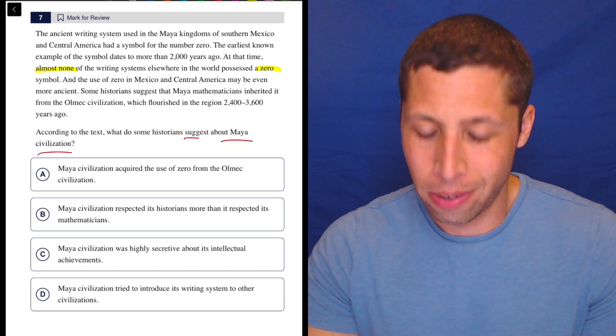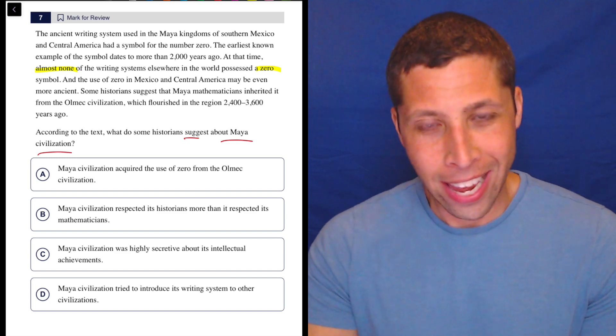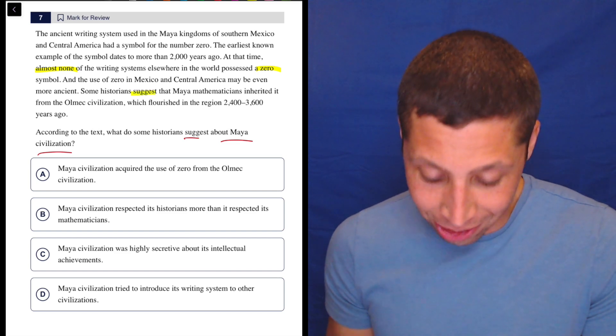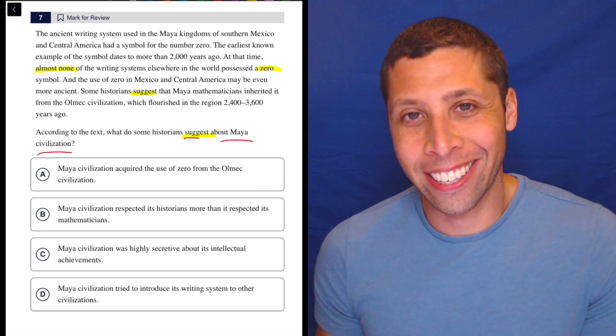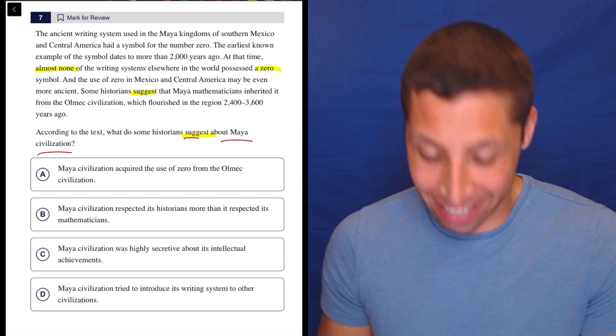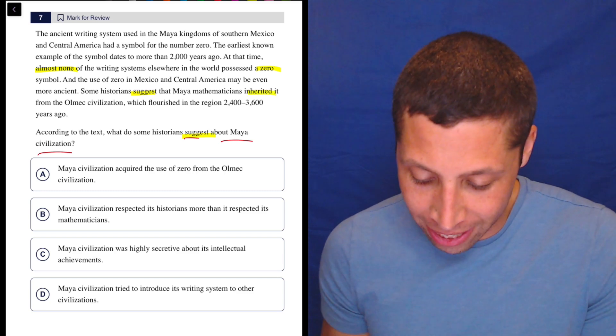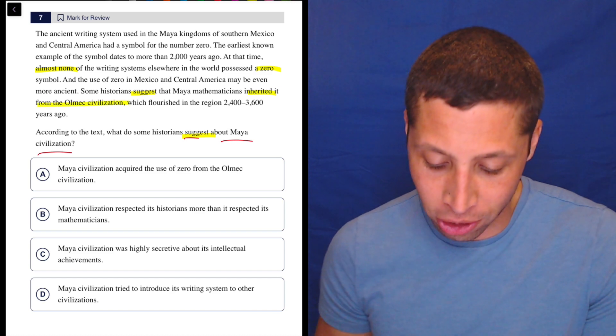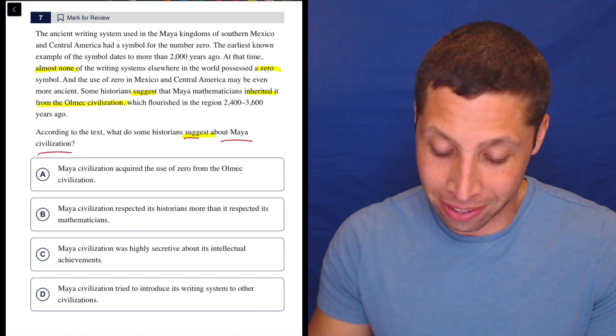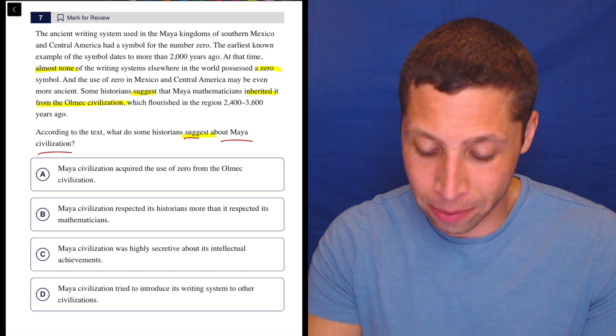Okay, so didn't they just say it at the end? Some historians suggest—isn't it kind of odd that they use the same word? Maya mathematicians inherited it from the Olmec civilization. Well, let's look at the choices. I don't know what we're going to need here, but it seems like they're just giving us the answer.